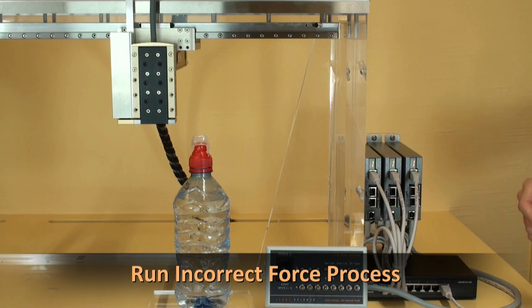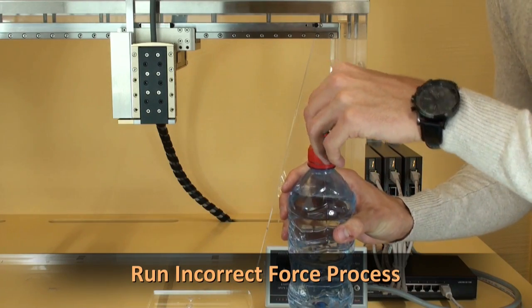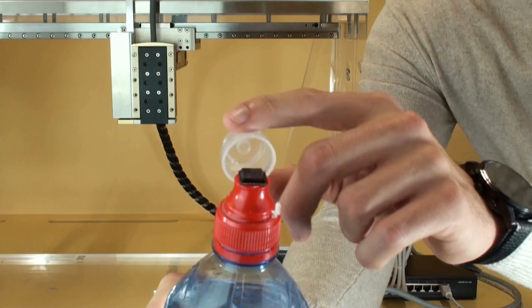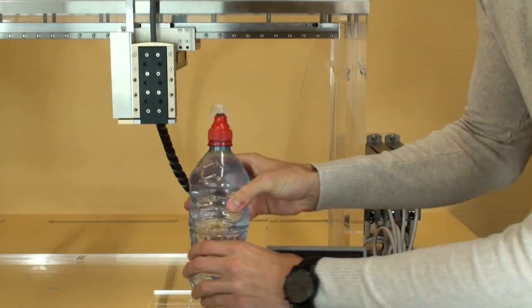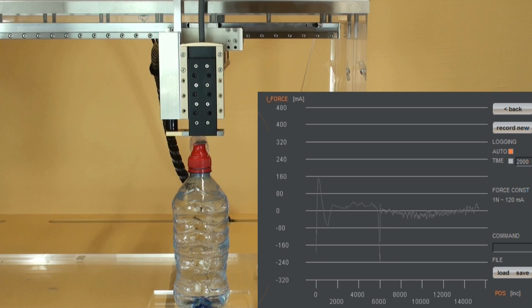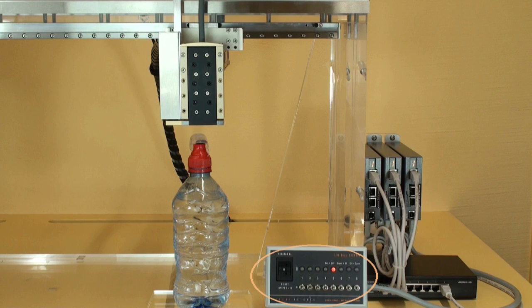The force process function is of course also able to signal if there is something wrong with the process. In our example we block the opening, so the lid won't be able to snap onto the bottle. Output 5 will tell us that the lid is blocked.